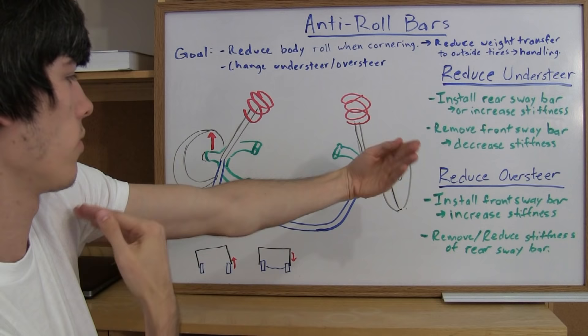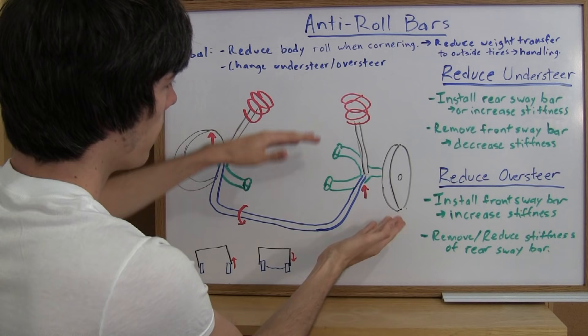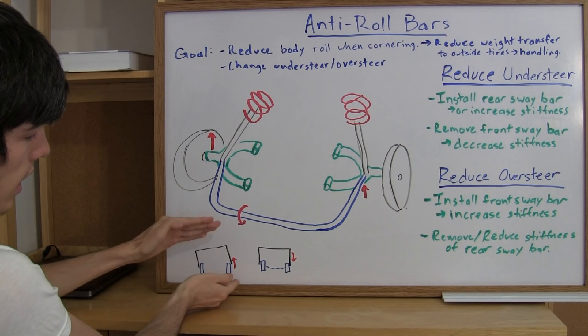And so as it pushes that up, it's trying to bring the tire up closer to the car. So that when you're in a corner here, it tries to bring that tire closer to the car and levels out the vehicle.